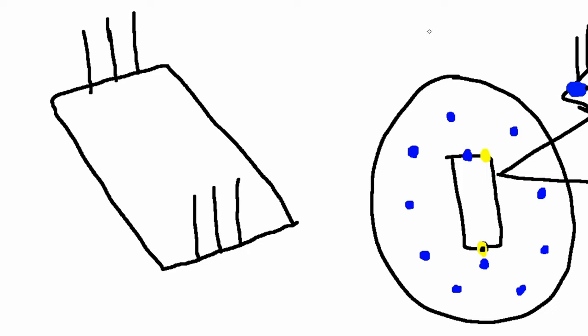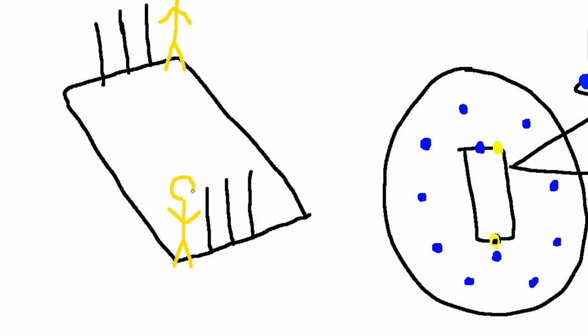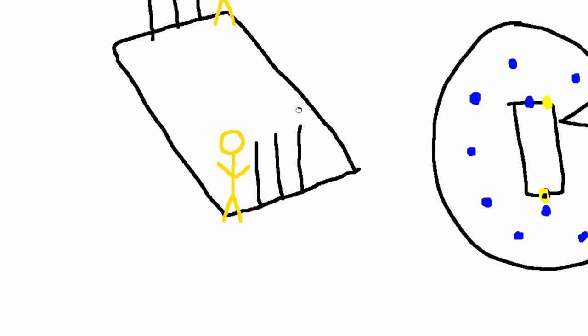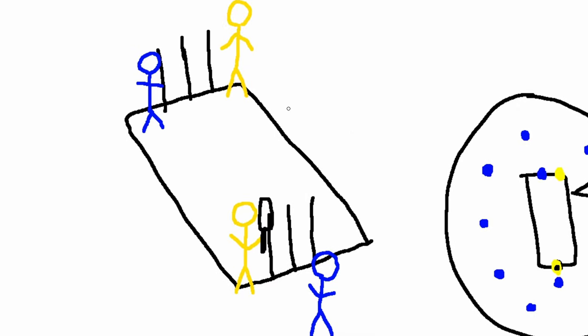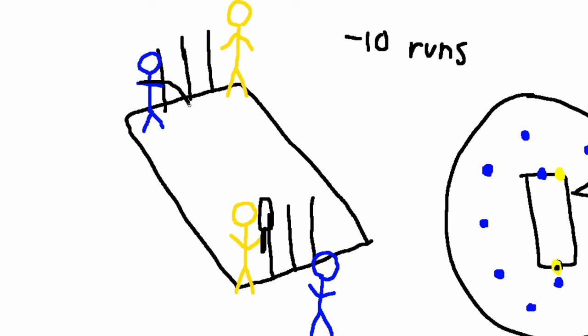Now we're going into the special rules. These are important for scoring. If you're the batsman and the bowler bowls the ball and you hit it and it hits the bowler in the nuts, that counts for an automatic 10 runs for your team.